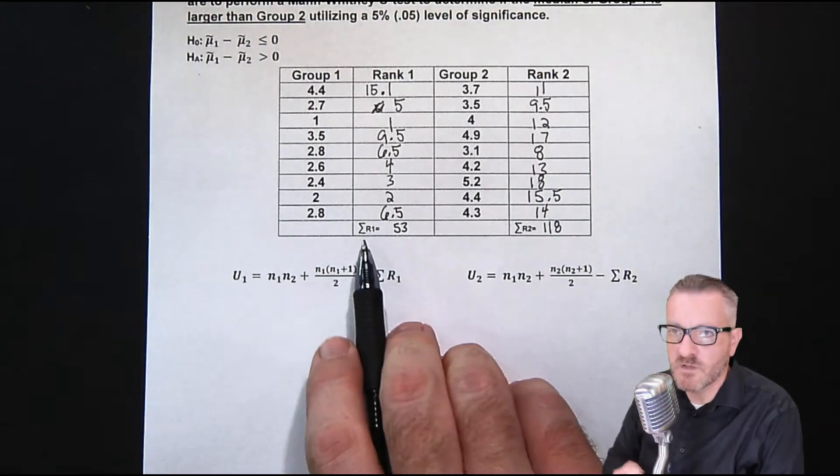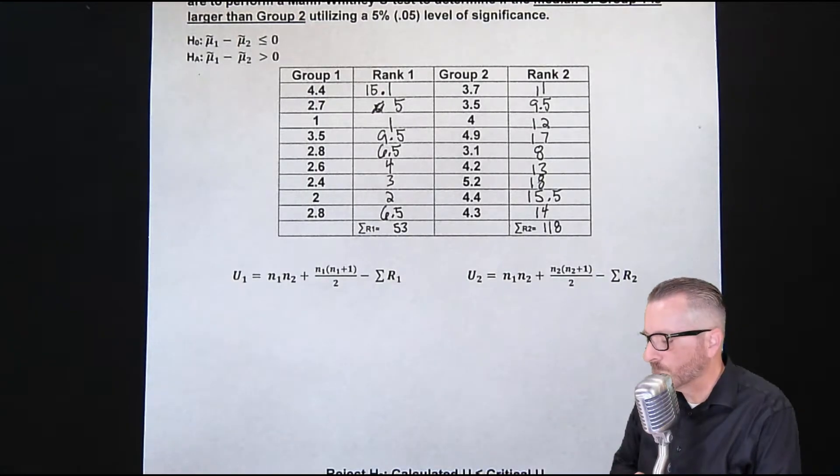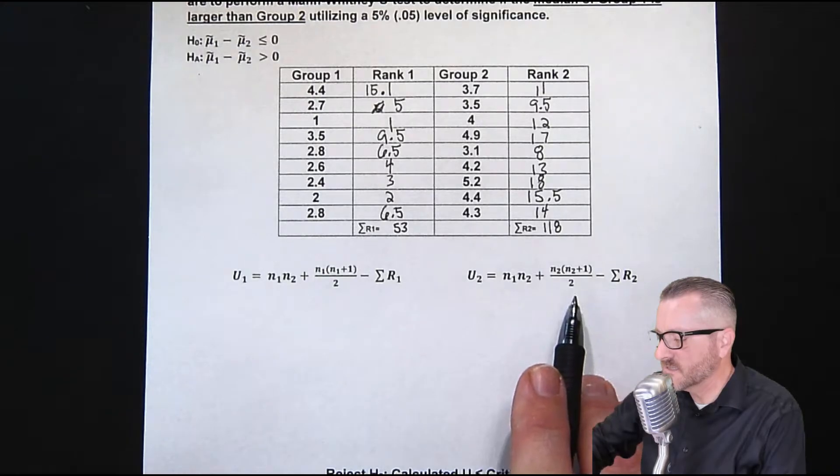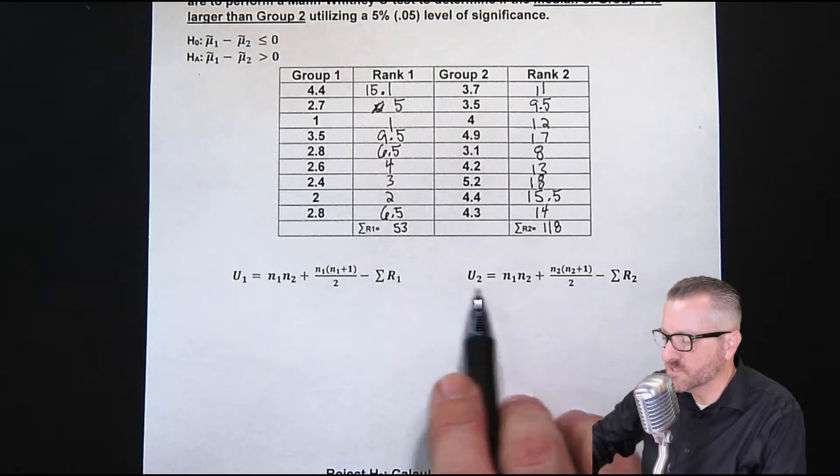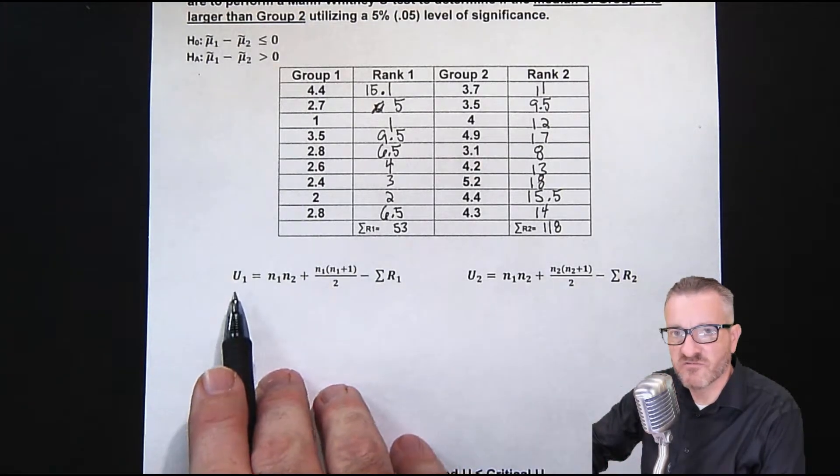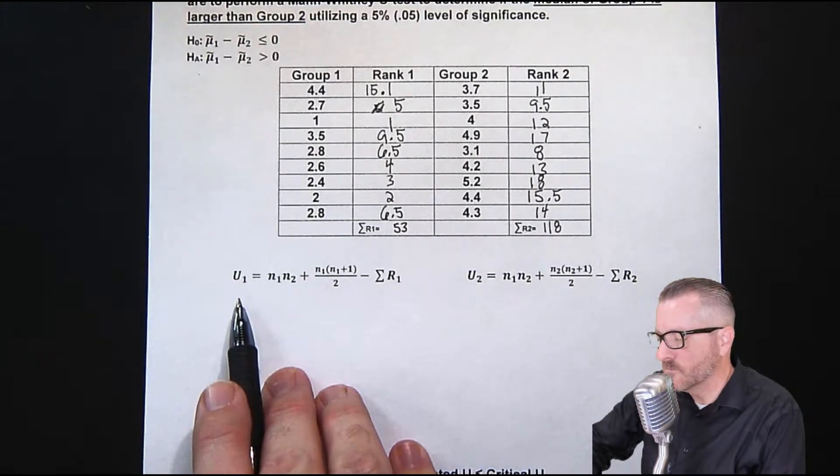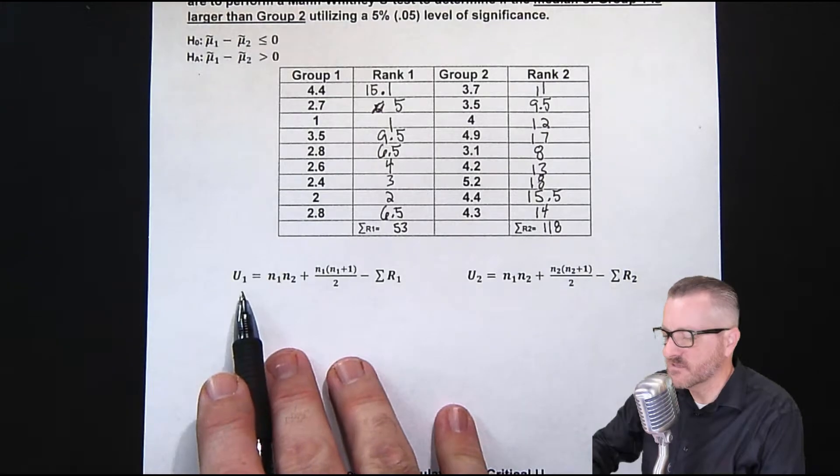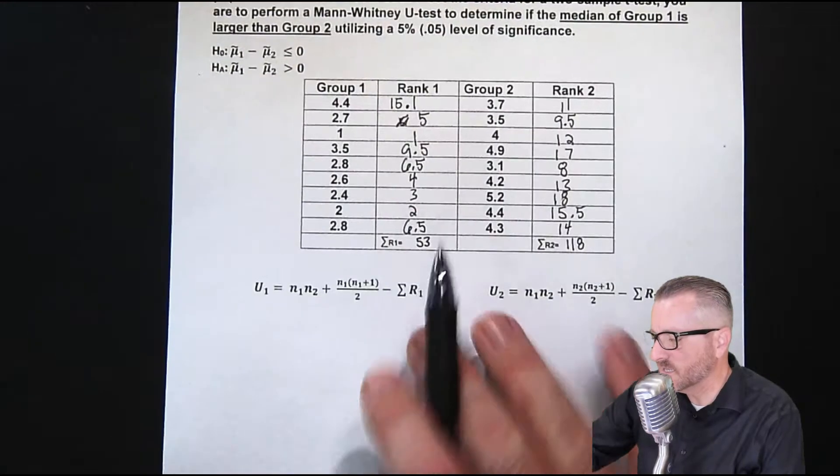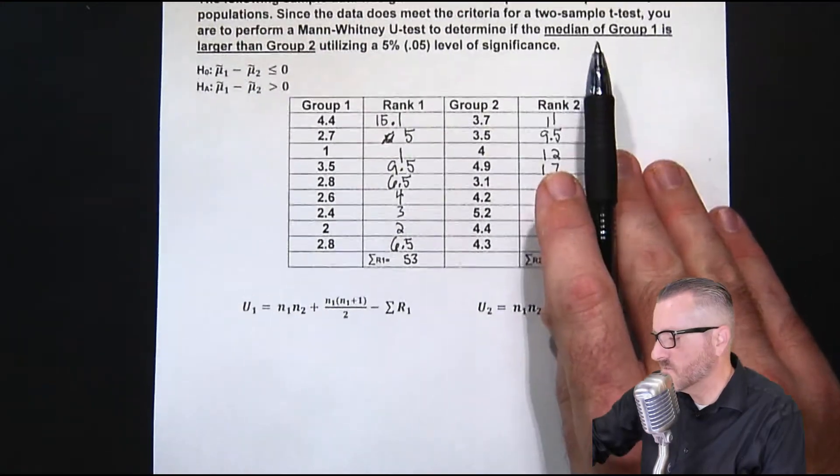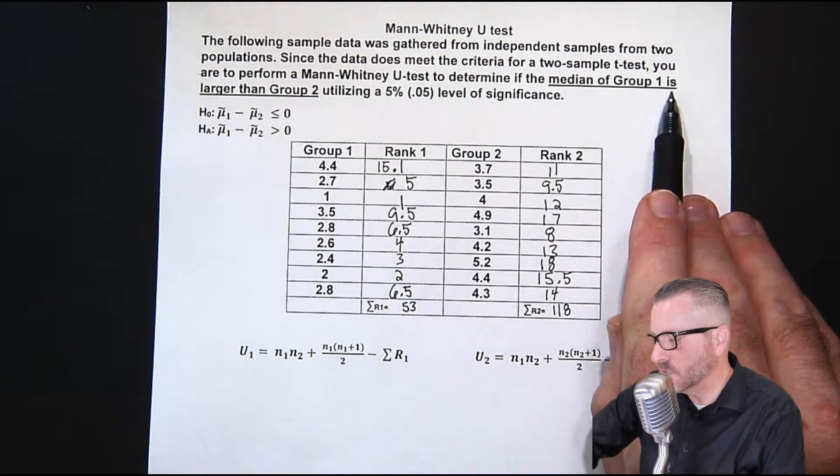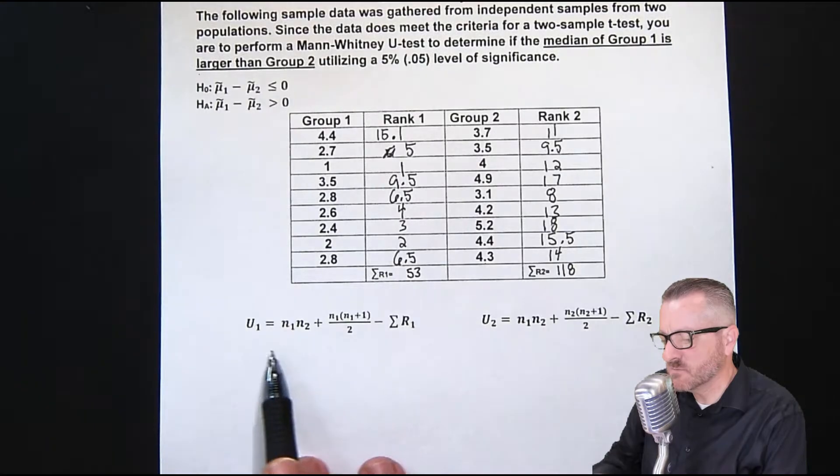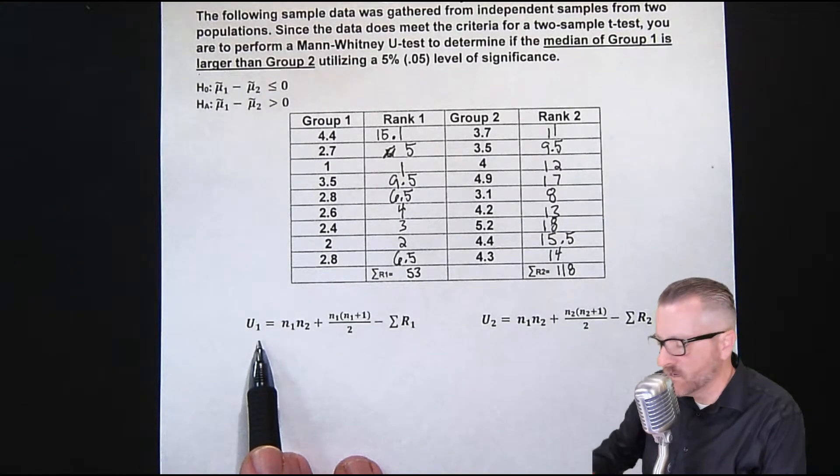So these are the ranks when we add them up. So now let's take a look at this. What we would do, this is the formula for group two. This is the formula for group one. Now, because this whole question is interested in the median of group one is larger than group two. What we do is we only have to do the math on this one, which is the group one calculation.